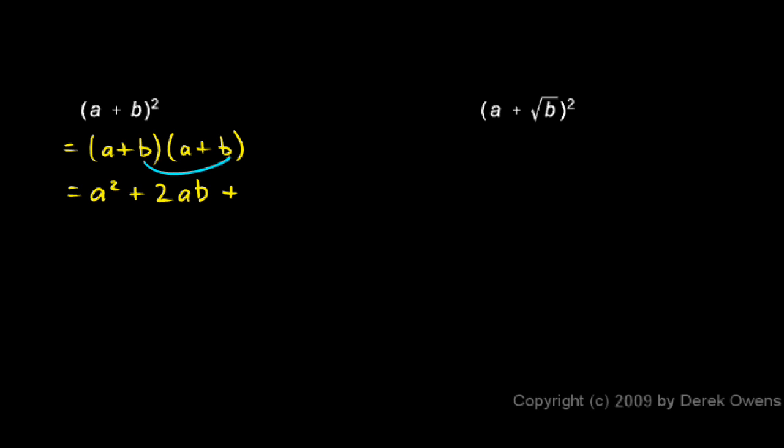And then we have b times b, so that's b squared. So a plus b squared is a squared plus 2ab plus b squared. We'll be applying that pattern in this next example.